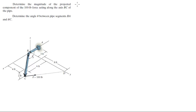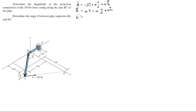For the first problem, the first thing you want to do is find all the position vectors involved. A sits at negative 3i plus 0j plus 0k. B sits at 0i plus 0j plus 0k. C sits at 6i plus 4j minus 2k. And D sits at 0i plus 12j plus 0k. Very easy to find.